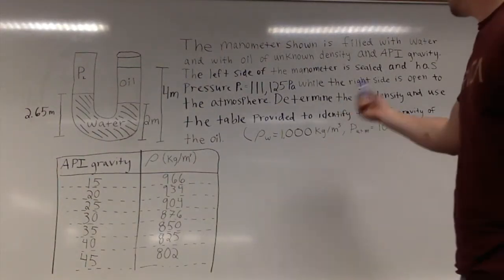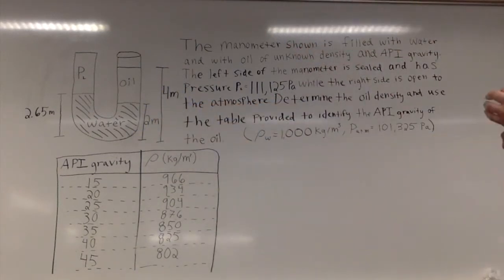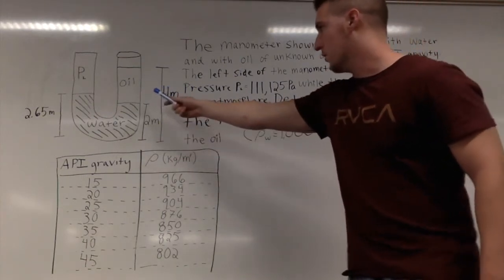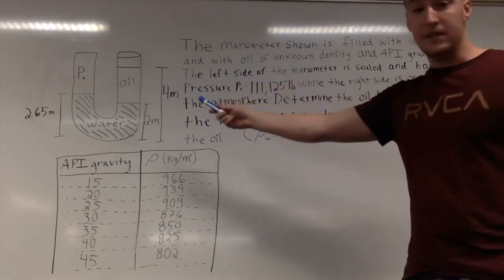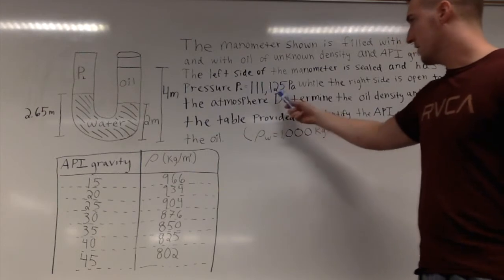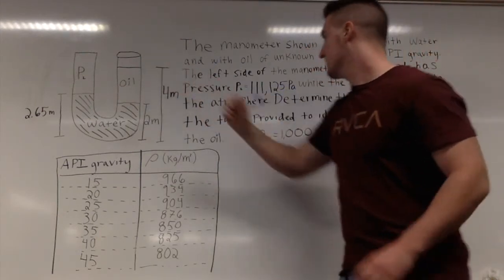The manometer shown is filled with both water and oil, and the density of the water is known while the density of the oil is unknown. The left side is sealed and has a pressure of 111,125 pascals, and the right side is open to the atmosphere.